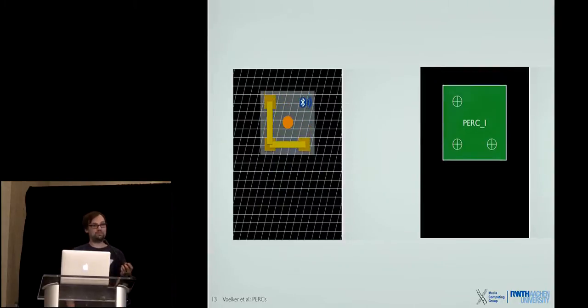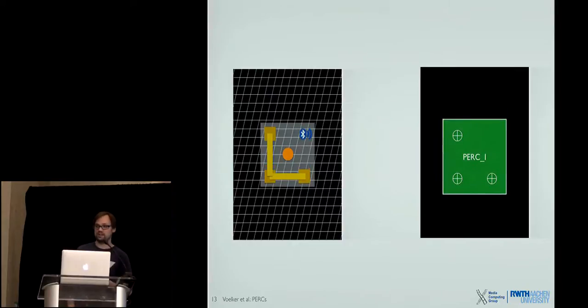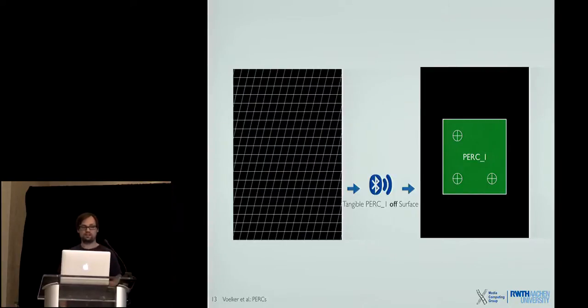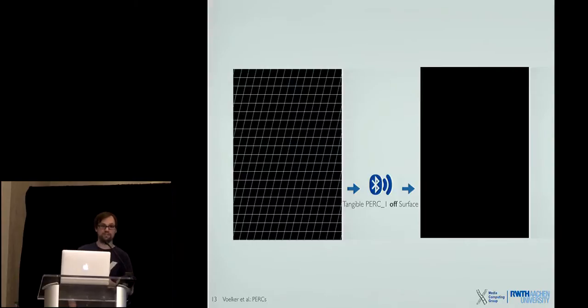If we start moving again the touch points reappear and we can use the position to detect the position and orientation of the tangible using just the normal touch points of the capacitive screen. And again if we remove the tangible from the surface it tells us okay it was just removed from the surface. So that's the first problem that we solved. Now we can actually detect tangibles constantly.